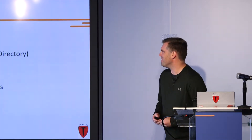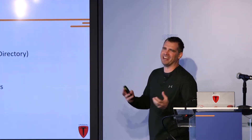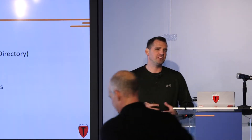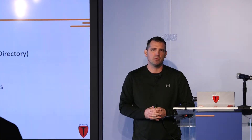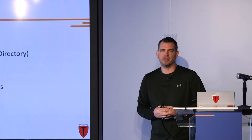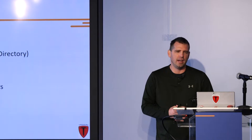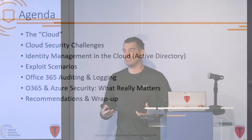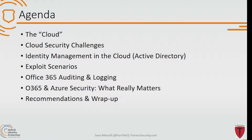So let's get started. We're going to talk about the cloud and some security challenges with the cloud. We're going to look at Active Directory in a variety of different scenarios, some exploit scenarios, some cloud discovery, and auditing and logging in Office 365 — what that actually means, how it works, what the limitations and problems are when we're expecting our logs and auditing to be configured there. And then ultimately what really matters: the security configurations and settings that are going to be really helpful, some recommendations, and then a wrap-up.